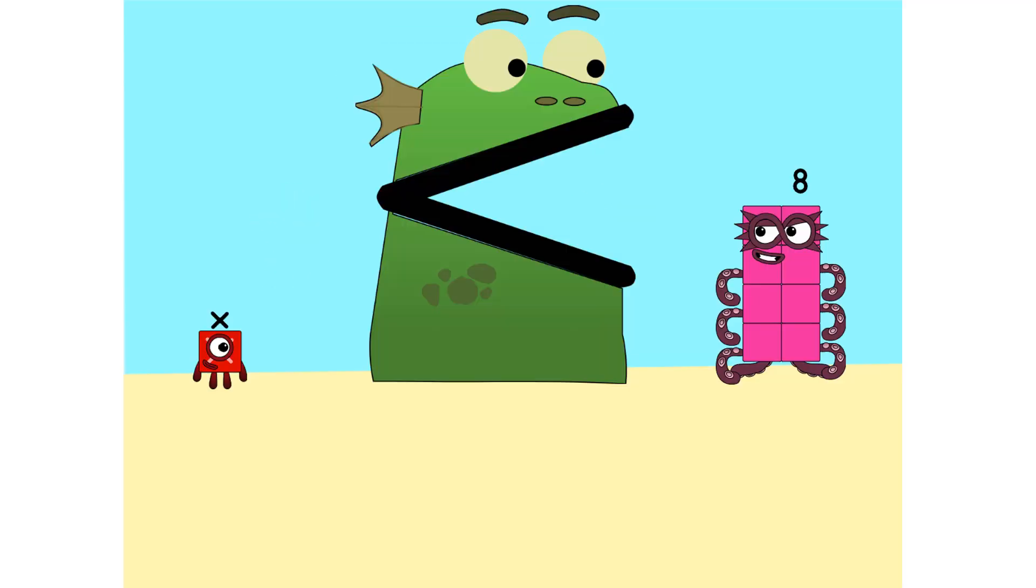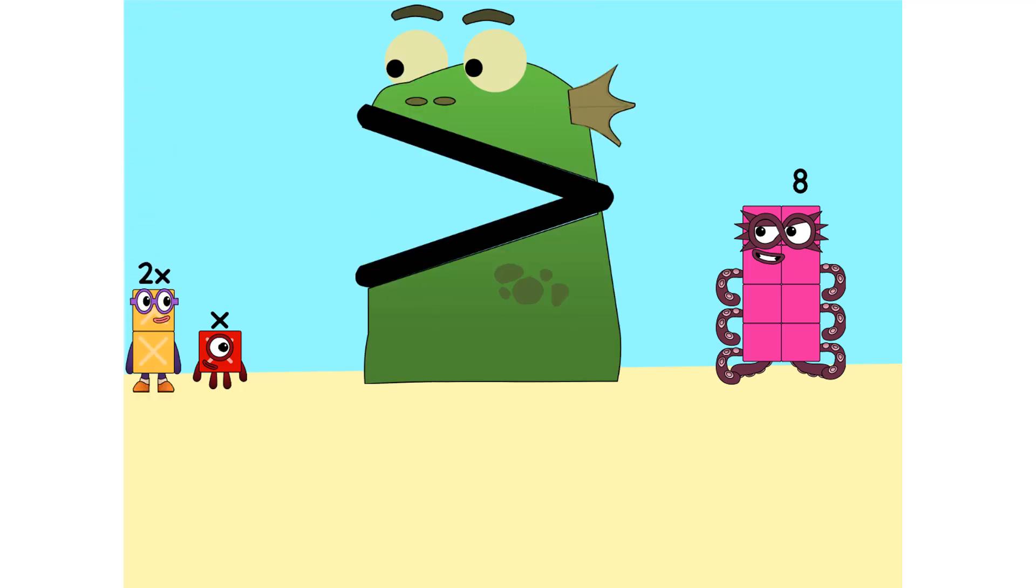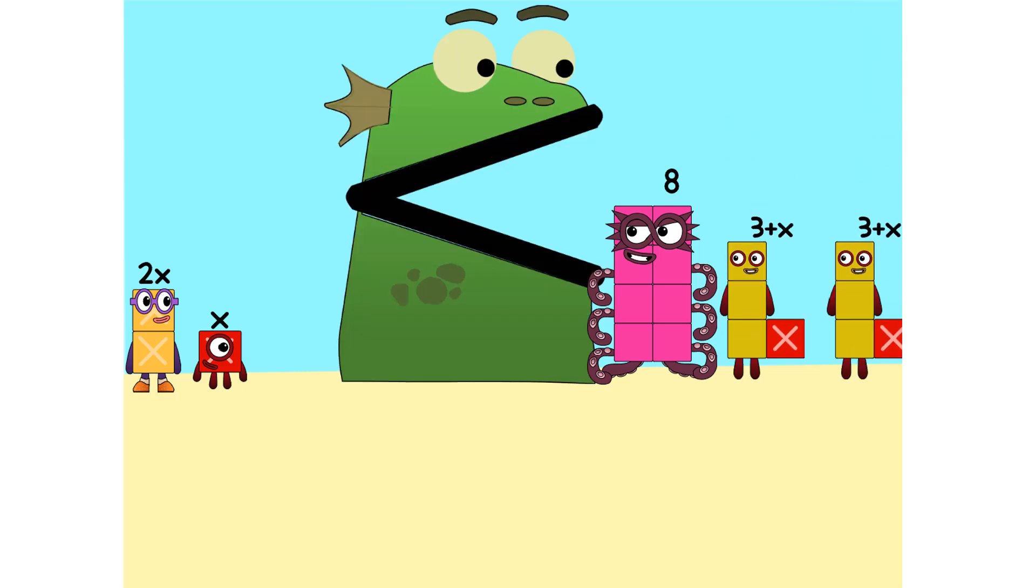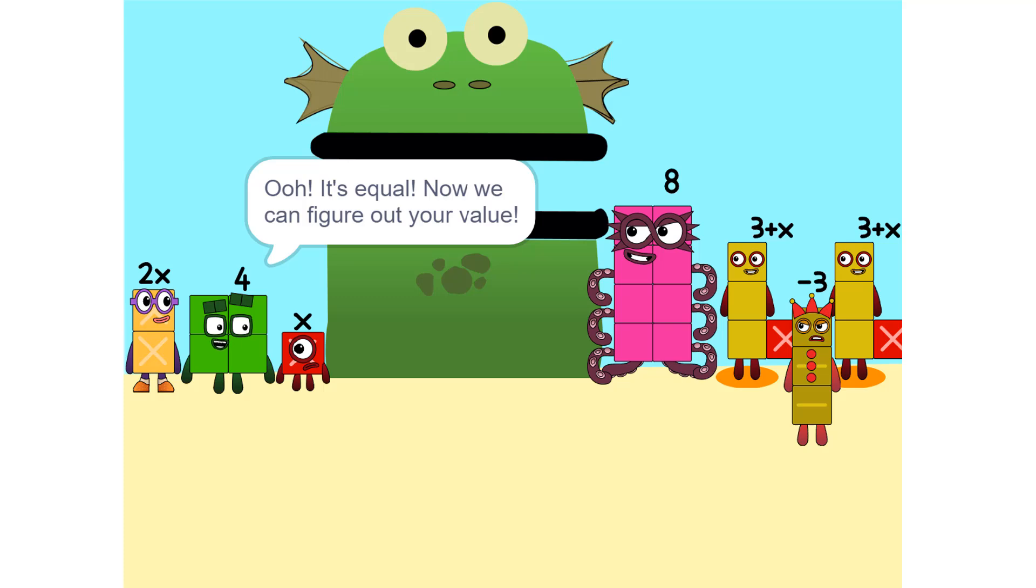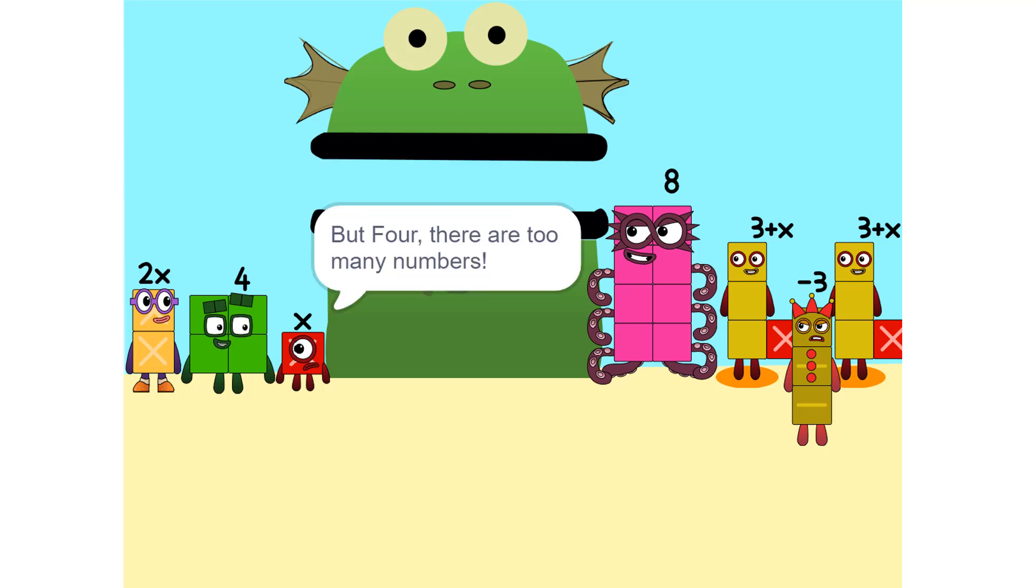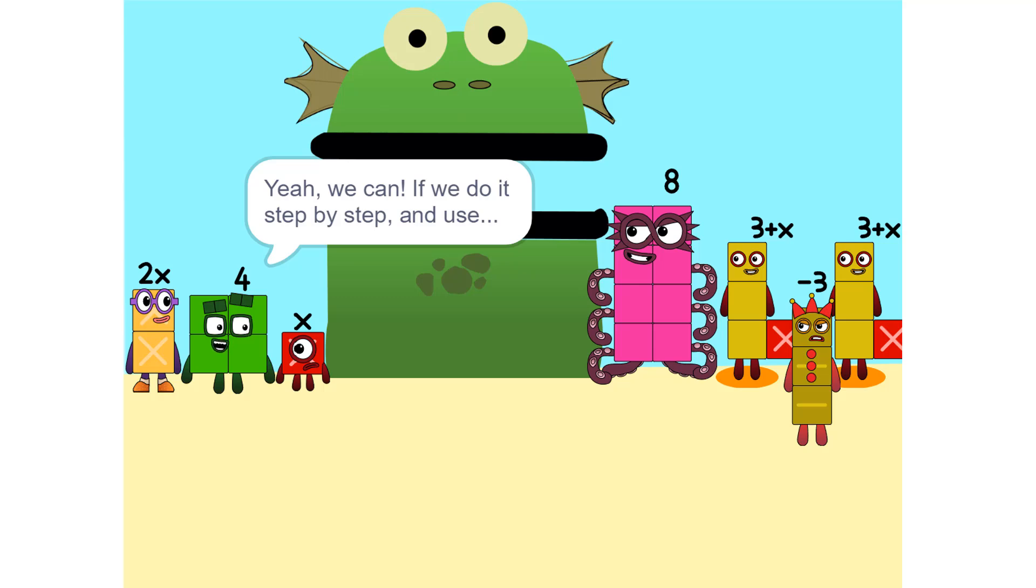So we add some more. 2 times X equals 2X. Nope. Oh, it's equal. Now we can figure out your value. But there are too many numbers. We'll never figure it out. Yeah, we can if we do it step by step and use a pencil. So let's get started.